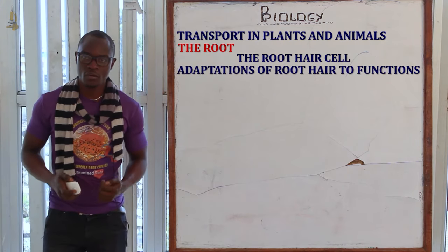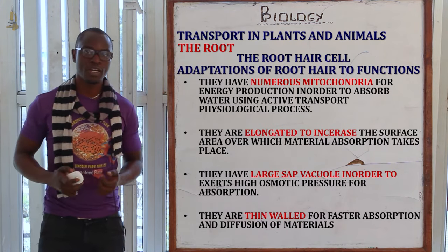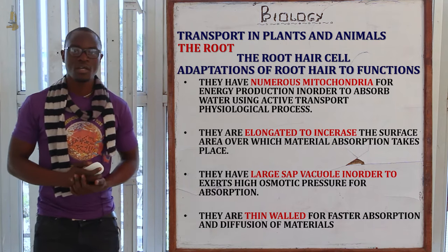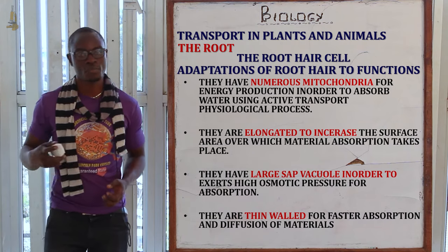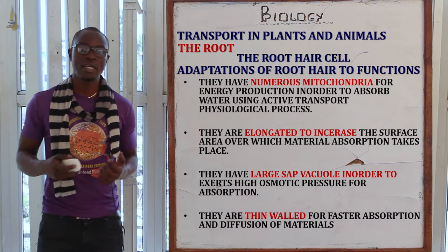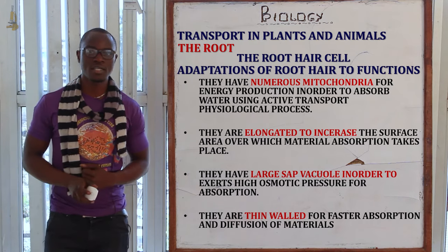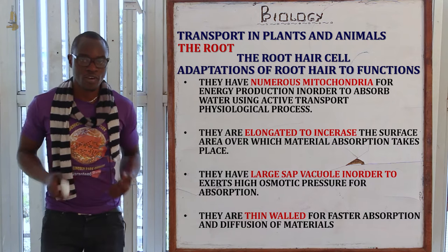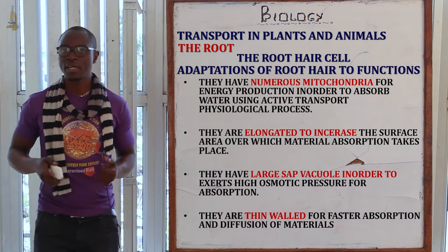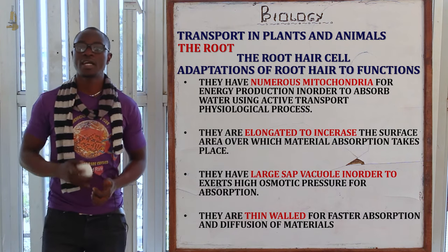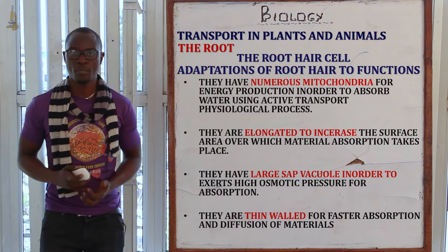The adaptations of root hairs to their function include: numerous mitochondria to provide energy for active transport and diffusion; an elongated shape to increase surface area for absorption of materials into the root hair; a large vacuole which exerts high osmotic pressure for absorption of substances; and thin walls for faster diffusion of materials in and out of their bodies.